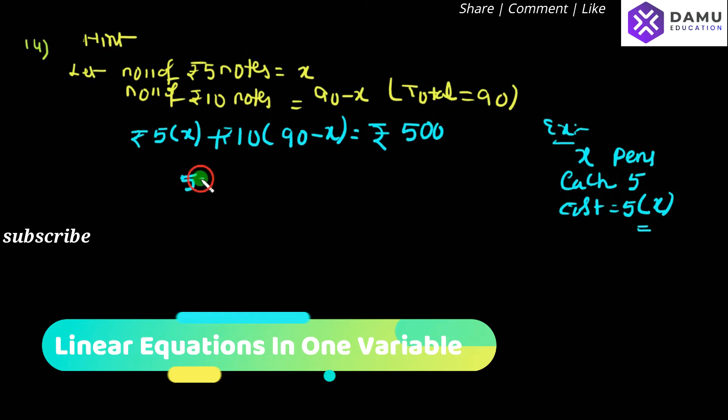So then multiply: 5x plus 10 into 90, that is 900, plus into minus, minus 10 into x will be equal to 500.